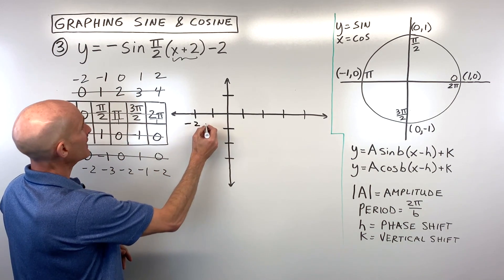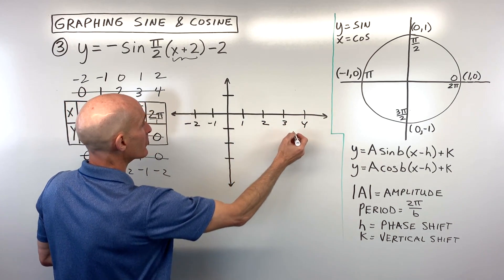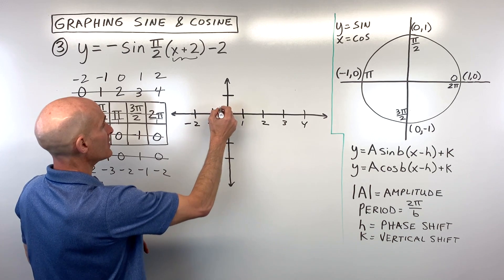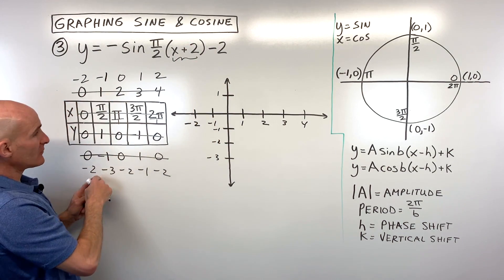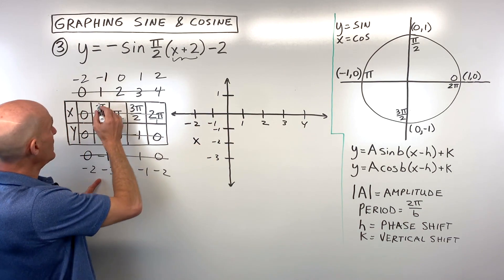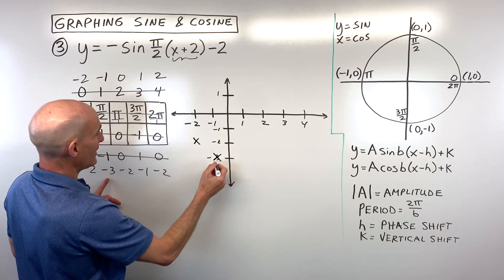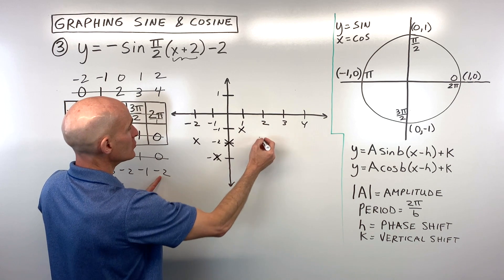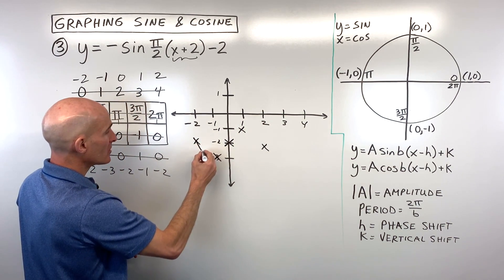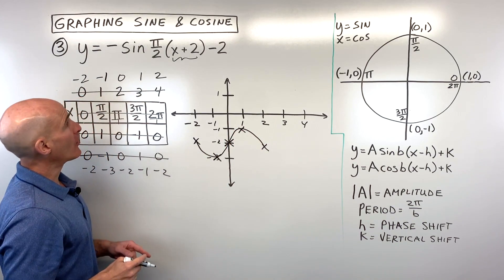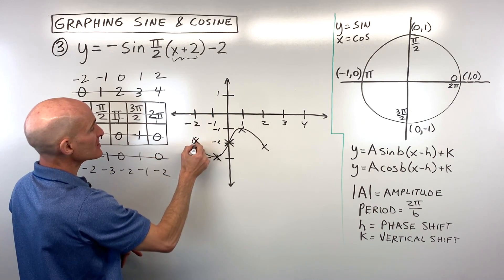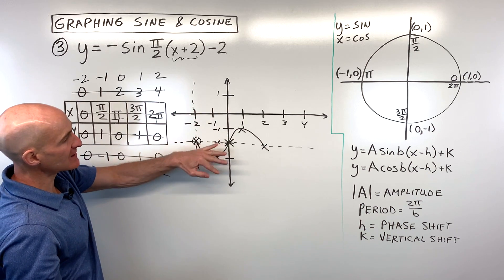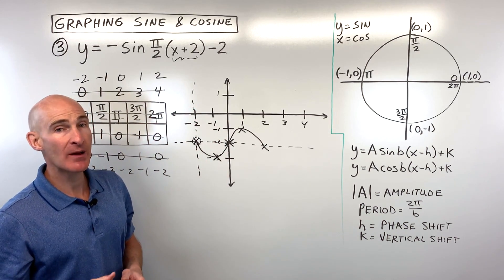On the x-axis we're counting by ones: -2, -1, 0, 1, 2, etc. On the y-axis also by ones: -3, -2, -1, 0, 1, etc. Plotting the final points: (-2, -2), (-1, -3), (0, -2), (1, -1), (2, -2). The graph looks like a reflected sine wave. You can also think of (-2, -2) as the new origin — that's your new x-axis and new y-axis — with the graph reflected.